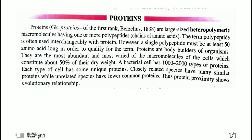Proteins are the body builders of organisms. They are the most abundant and most varied of the macromolecules of cells, constituting about 50 percent of their dry weight. A bacterial cell may contain 1,000 to 2,000 types of proteins. Every cell has its own unique protein. Closely related species have similar proteins, but unrelated species have few common proteins.